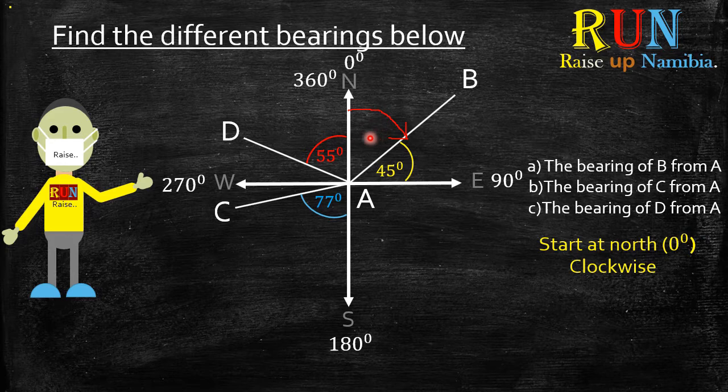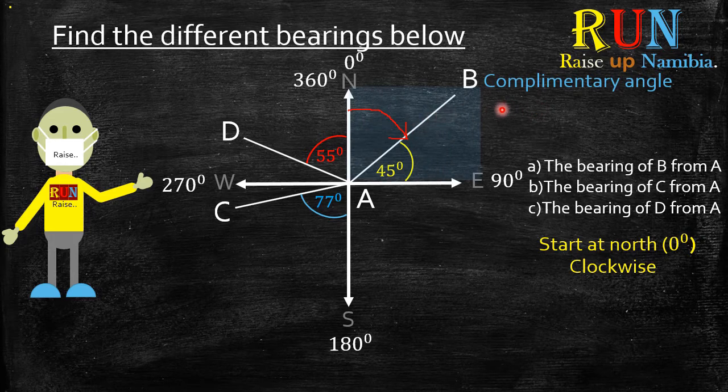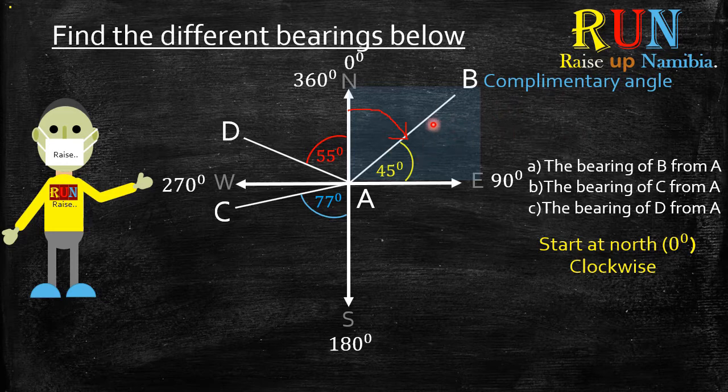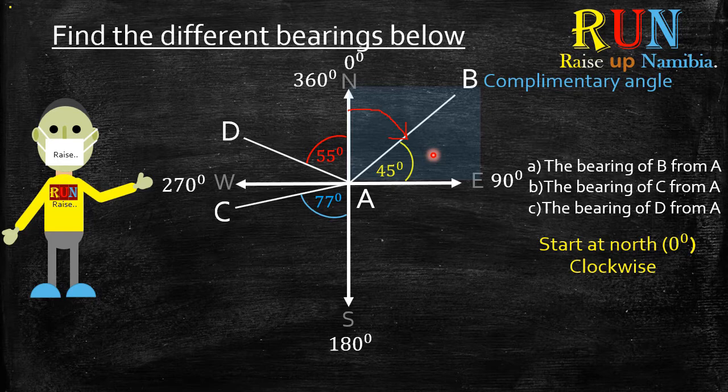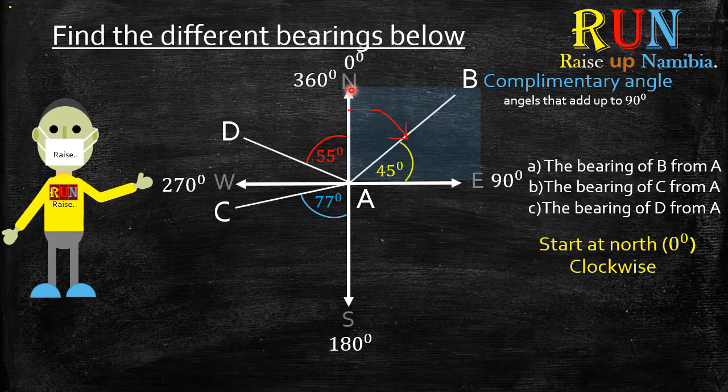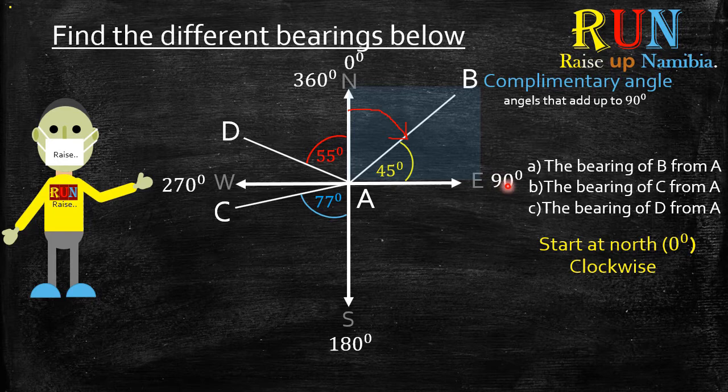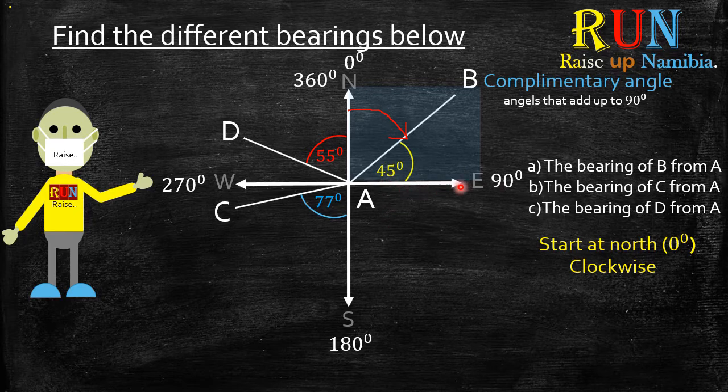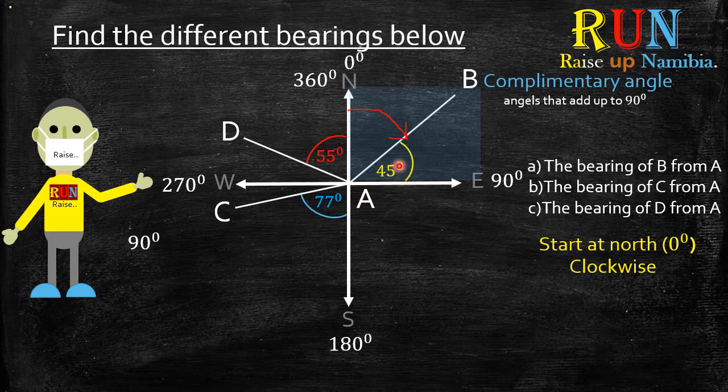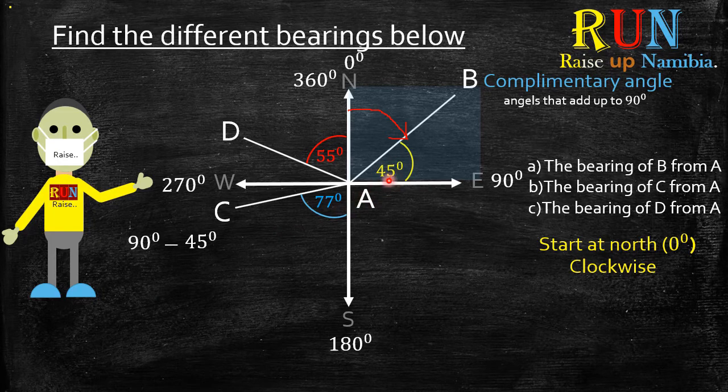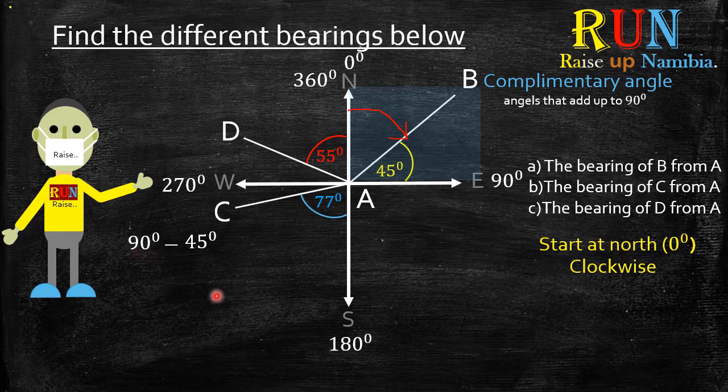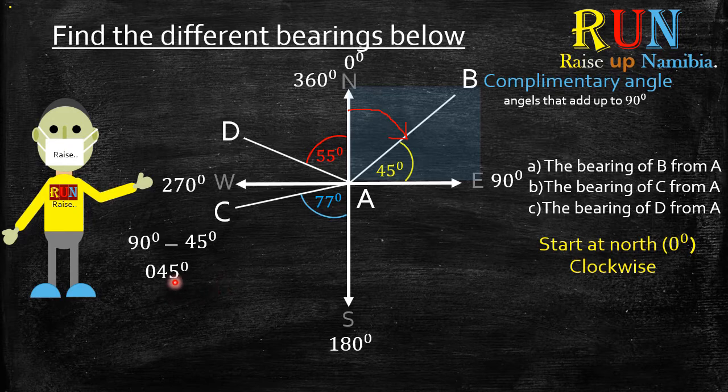Now how do we find this? This is actually very easy because if you take a closer look, here we have what we call complementary angles. This is basically angles that add up to 90 degrees because remember when you come from the north to the east over here, it's a 90 degree. So meaning these two angles should add up to 90. You simply take the 90 and then you subtract the angle that you are already given which is 45 degrees. If you subtract 45 degrees from 90 degrees, you get 45 degrees.